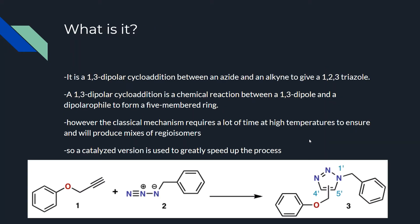What is it? It is a 1,3-dipolar cycloaddition between an azide and an alkyne to give a 1,2,3-triazole. A 1,3-dipolar cycloaddition is a chemical reaction between a 1,3-dipole and a dipolarophile to form a five-membered ring. However, the classical mechanism requires a lot of time at high temperatures and will produce mixtures of regioisomers. So a catalyzed version is used to greatly speed up the process.